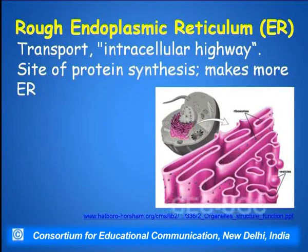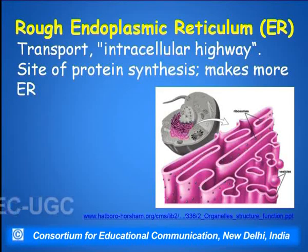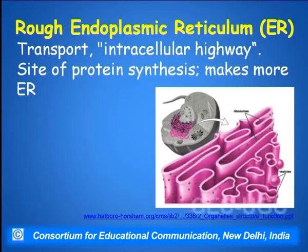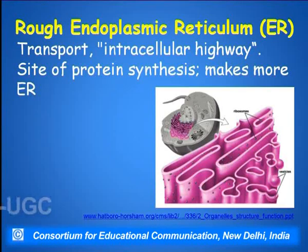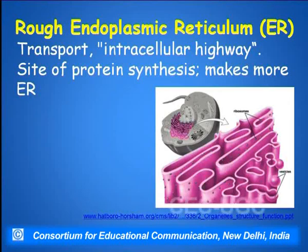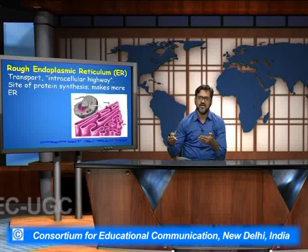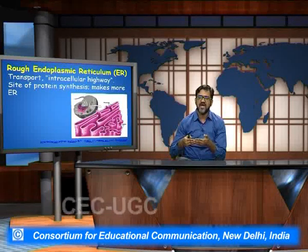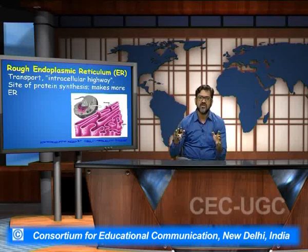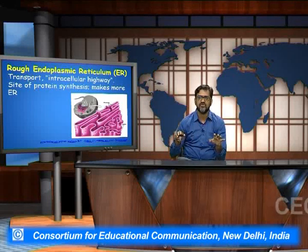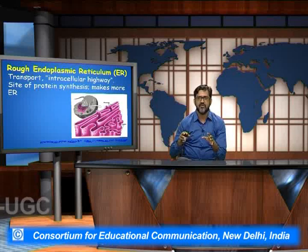The next important structures are called the rough endoplasmic reticulum, which plays a very important role in transport and is many times referred to as the intracellular highway. They are specifically the sites of protein synthesis. As soon as the new DNA is transcribed into RNA, these RNAs get attached to the protein molecules present on top of the ribosomes, which are referred to as the rough endoplasmic reticulum.